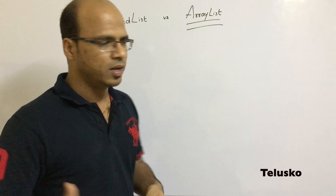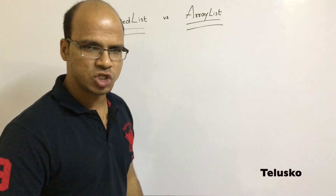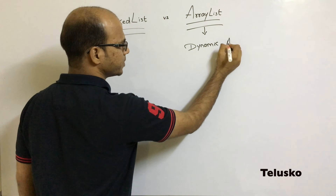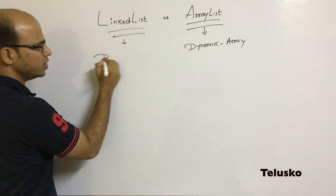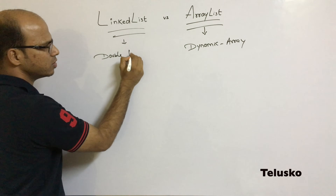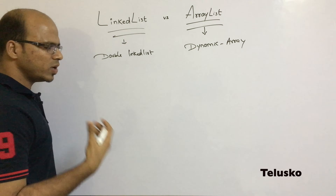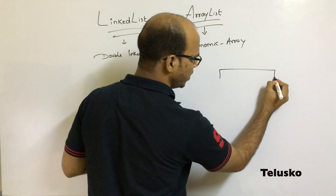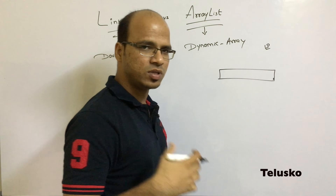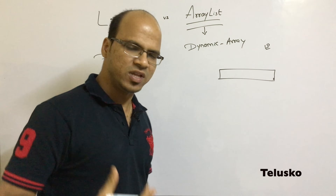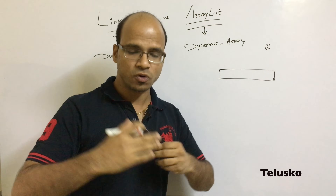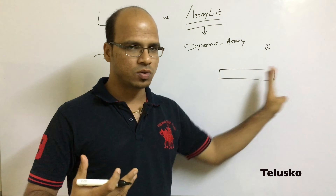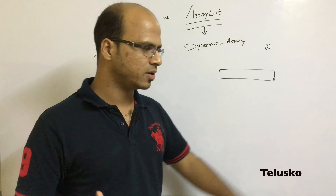The difference is in their implementation. ArrayList is implemented using the concept of a dynamic array, and LinkedList is implemented using the concept of a doubly linked list. In a dynamic array, the initial capacity is 10. If you go beyond 10 elements, it increases the capacity by 50% — from 10 to 15, and so on.